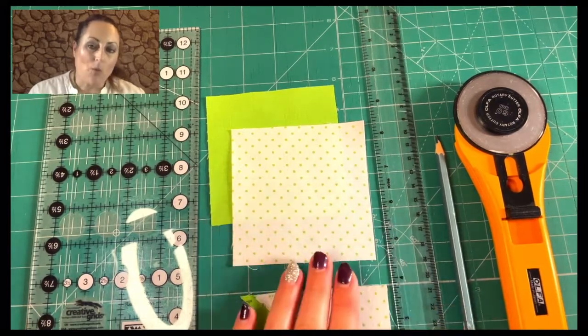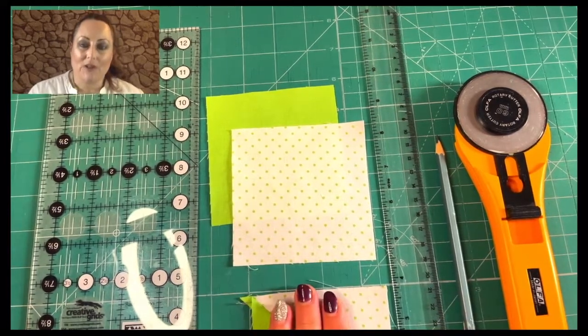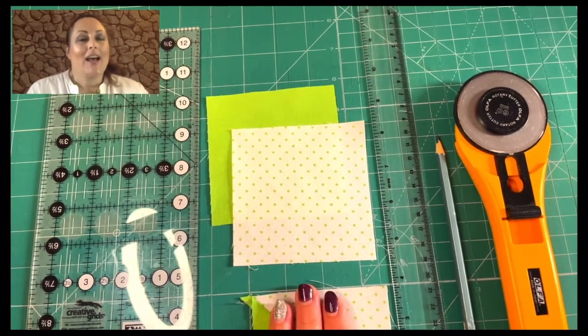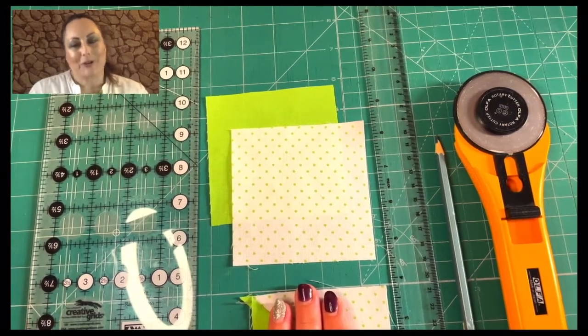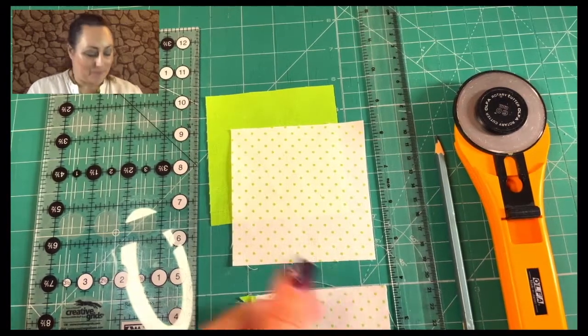And that, it doesn't matter what size you want to finish with, you just add seven eighths of an inch. Now, that is really easy when you want a three inch or a four inch or a five inch finished square.